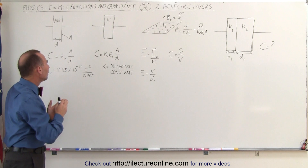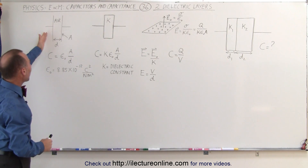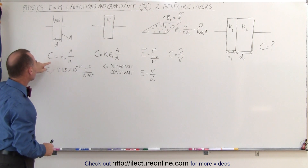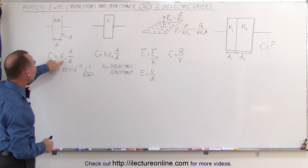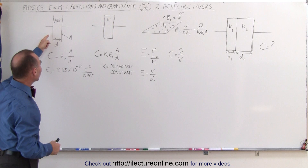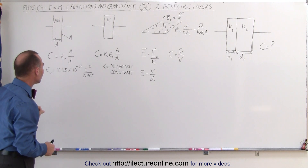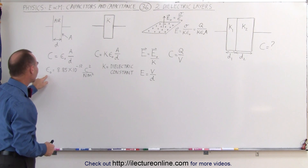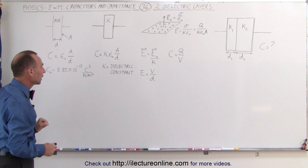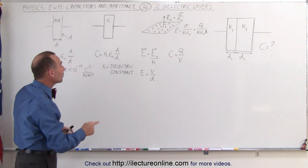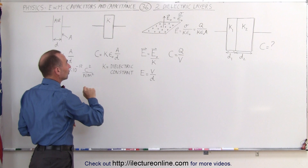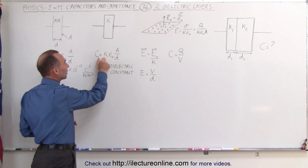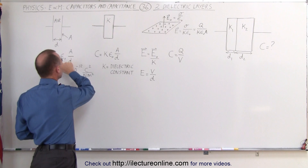Let's go back to the beginning. Here's a simple capacitor with air between the plates. The capacitance for a physical capacitor is equal to epsilon sub nought times the area of the plates divided by the distance between the plates, where epsilon sub nought is given right here. If there's a dielectric in there, then you have to multiply that capacitance times the dielectric constant. A capacitor with a dielectric has a greater capacitance than one without.